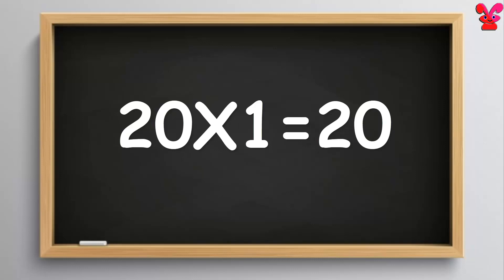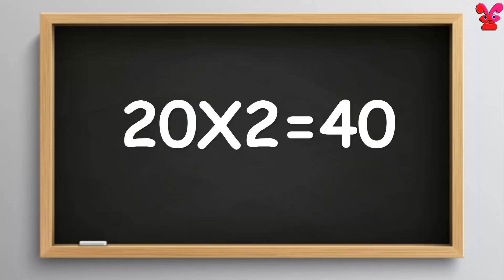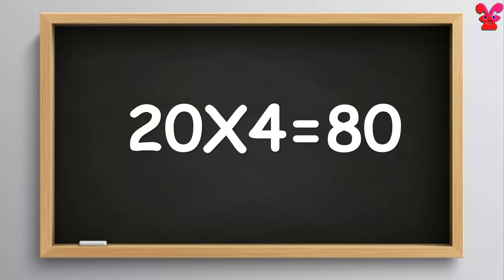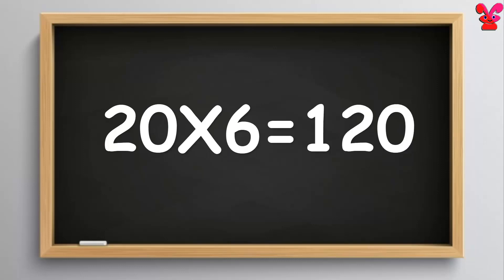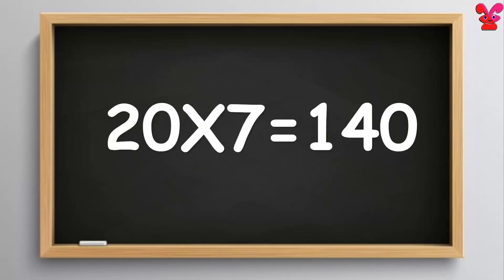21s are 20. 22s are 40. 23s are 60. 24s are 80. 25s are 100. 26s are 120. 27s are 140.